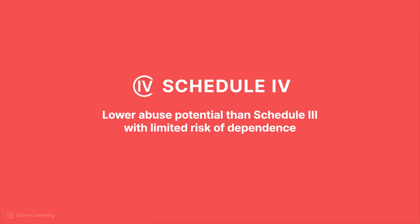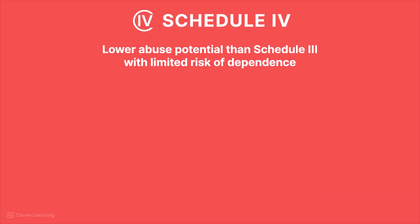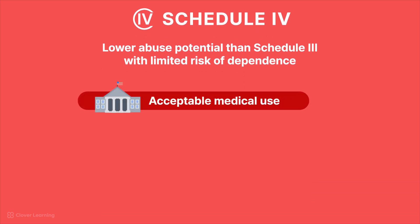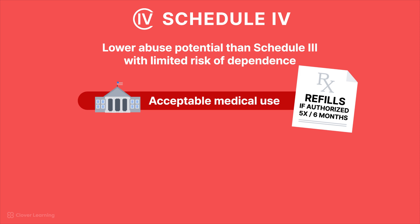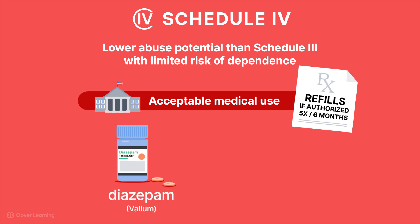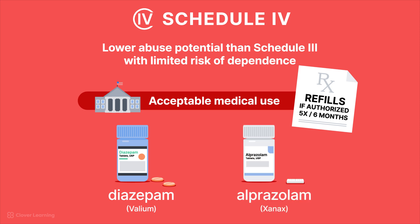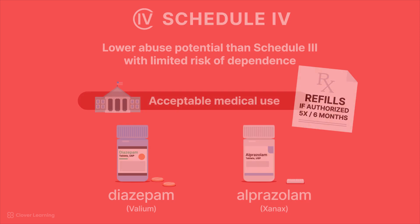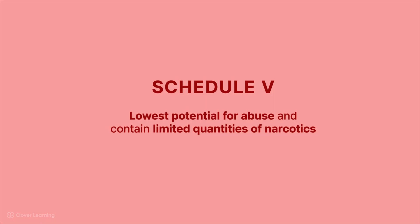Schedule IV substances have a lower abuse potential than Schedule III drugs, with accepted medical uses such as anxiety treatment and limited risk of dependence. These drugs are also available by prescription only and may be refilled five times in six months if authorized by a provider. Examples include diazepam, which is Valium, and alprazolam, which is Xanax.